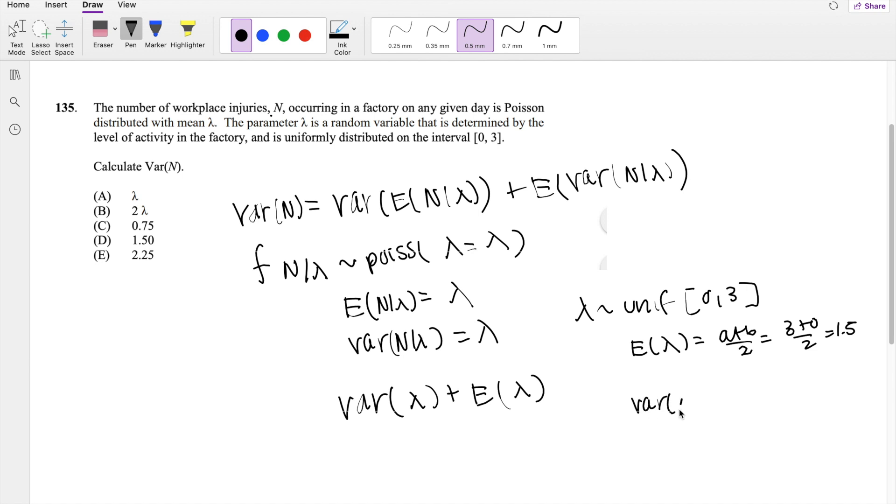Likewise, the variance of lambda, because we know it's a uniform distribution, is b minus a squared divided by 12. So in our case, it's going to be 3 minus 0 over 12, this thing squared, which is equal to 0.75.